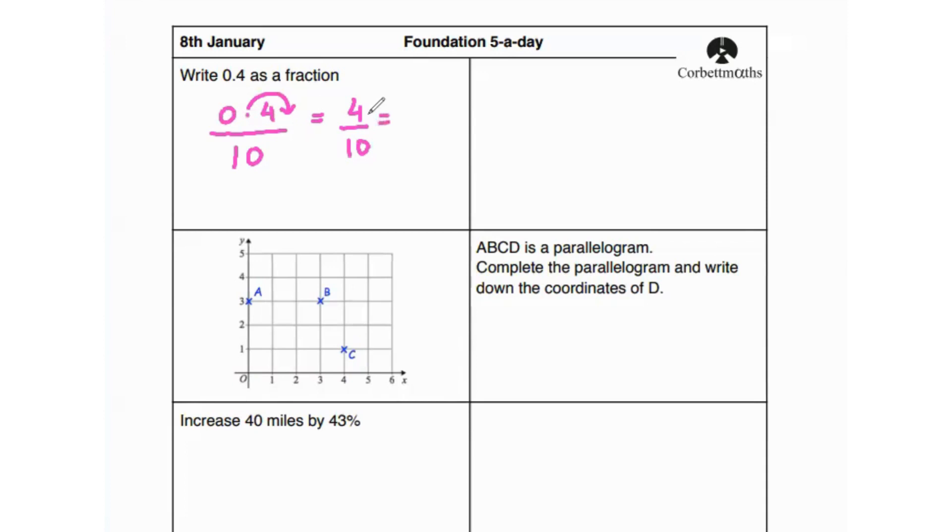And in order to simplify it, we know that four is two times two, and 10 is two times five, which means the final answer is going to be two over five. Why two over five? Because we can cancel out the two and two in the numerator and denominator, and we're left with two over five.